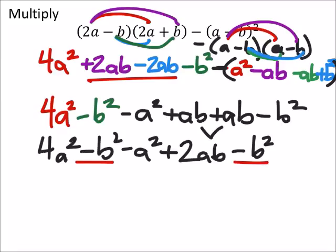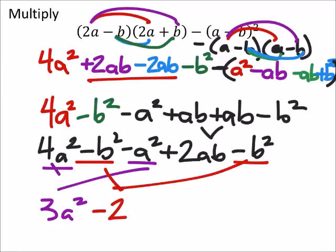And we could combine these two as well, and the 4a squared minus the a squared. So these two give us 3a squared. These two give us negative 2b squared. Then we're just going to add this to 2ab.